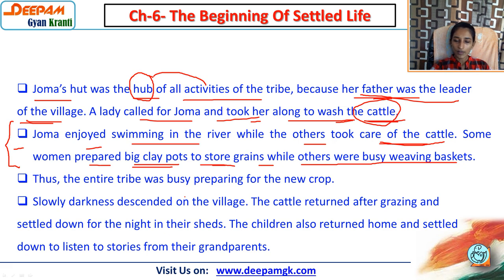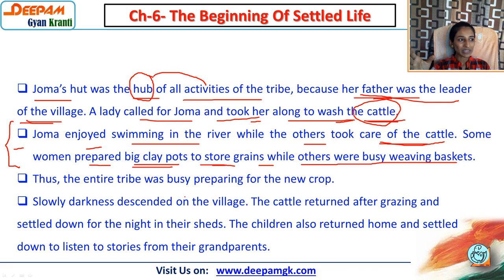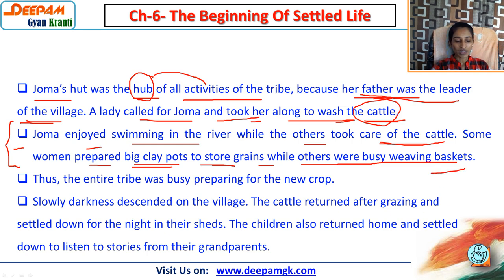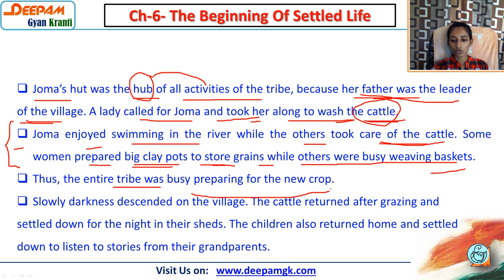Weaving means making things by hand. People in jungle and backward areas are connected with home-made industries - making baskets and decorating things using their hands. Thus the entire tribe was busy preparing for the new crop.